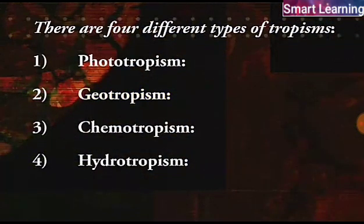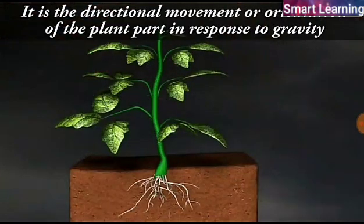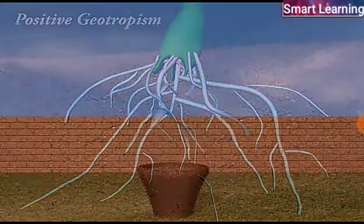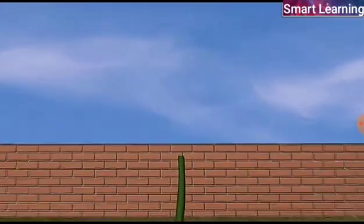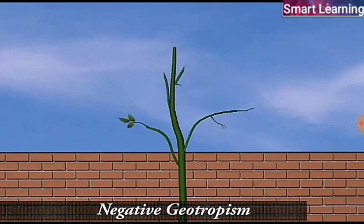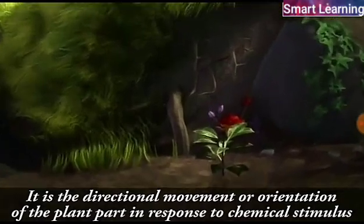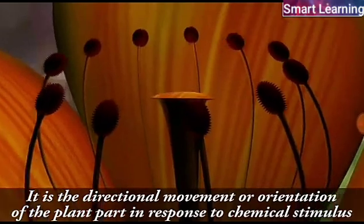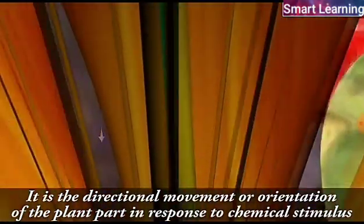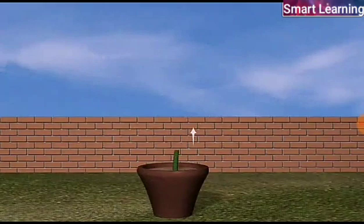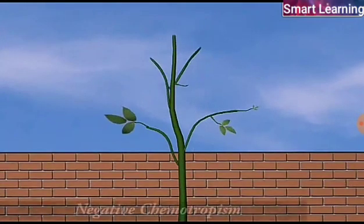The second type is geotropism — the directional movement or orientation of the plant's part in response to gravity. If the plant's part moves in the direction of gravity, it is called positive geotropism; if it moves against the direction of gravity, it is termed negative geotropism. The third type is chemotropism — the directional movement or orientation of the plant's part in response to a chemical stimulus. If the plant's part moves towards the chemical stimulus, it is called positive chemotropism; if it moves away from it, it is called negative chemotropism.